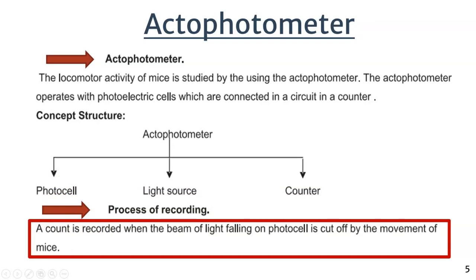We use the actophotometer to check the locomotor activity in animals. It operates with a photoelectric cell connected with a circuit and a counter. The actophotometer is divided into three parts: photocells, light source, and the counter. The photocells capture the light source and show the count reading. A count is recorded when the beam of light falling on the photocell is cut off by the movement of the mice.